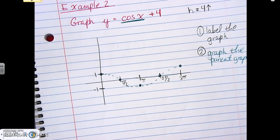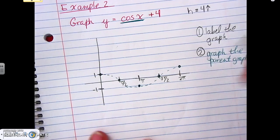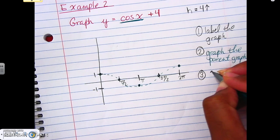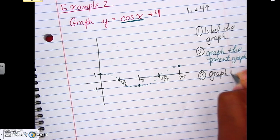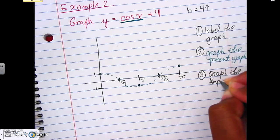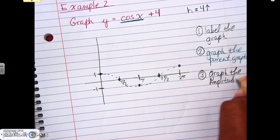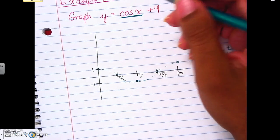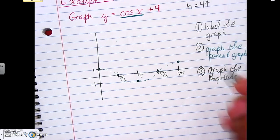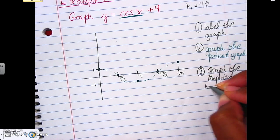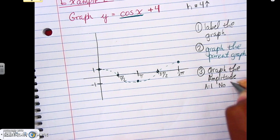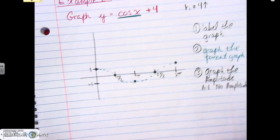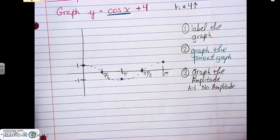If we had an amplitude, step three would be to graph the amplitude. Here the number in front of cosine is one, so our amplitude is one — therefore there's no amplitude change. So we don't do anything with the graph because there's no amplitude to apply.